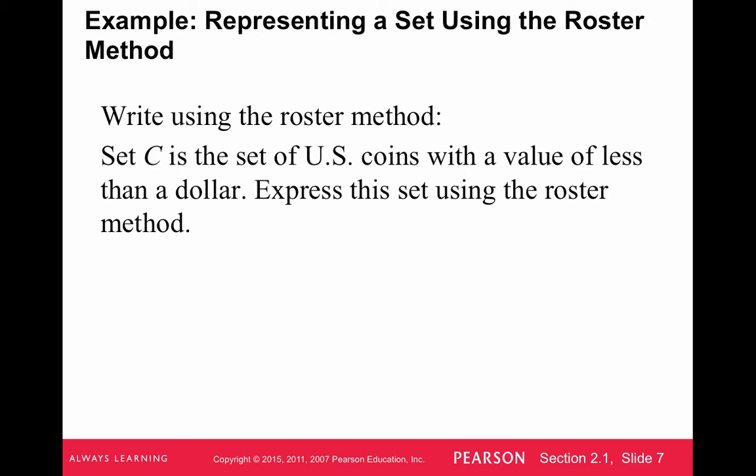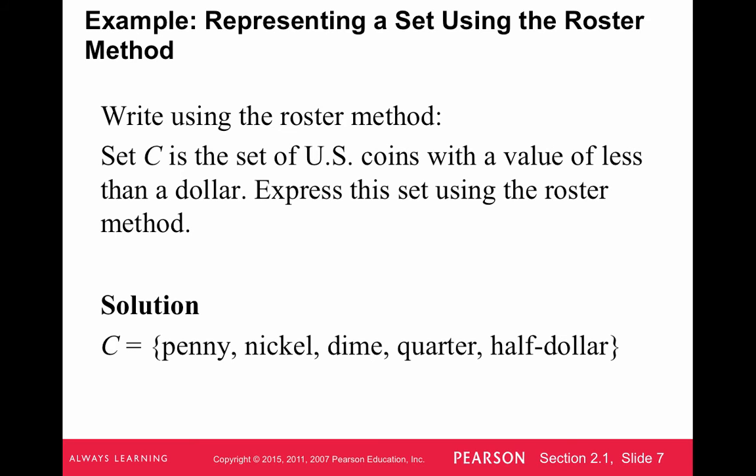Representing a set using the roster method. So write C using the roster method, or write using the roster method. Set C is the set of U.S. coins with a value of less than a dollar. Express this set using the roster method. So we're just going to list them out. So we say C is penny, nickel, dime, quarter, half dollar.